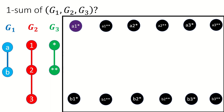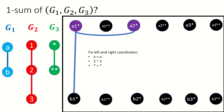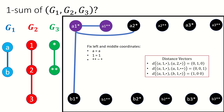Starting with a1★, we want to find all vertices that share exactly two coordinates with a1★ and whose other coordinate is adjacent to the other coordinate of a1★. Fixing the middle and right coordinates, b1★ satisfies this criteria, as b is adjacent to a, 1 equals 1, and ★ equals ★. Fixing the left and right coordinates, a2★ satisfies our criteria, as 2 is adjacent to 1, a equals a, and ★ equals ★. Finally, fixing the middle and left coordinates, a1★★ satisfies our criteria, as ★★ is adjacent to ★, a equals a, and 1 equals 1. As we discussed earlier, the distance vectors for each of these pairs all have two 0s and one 1.